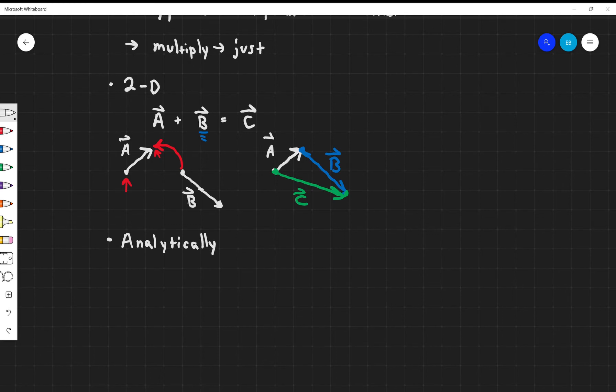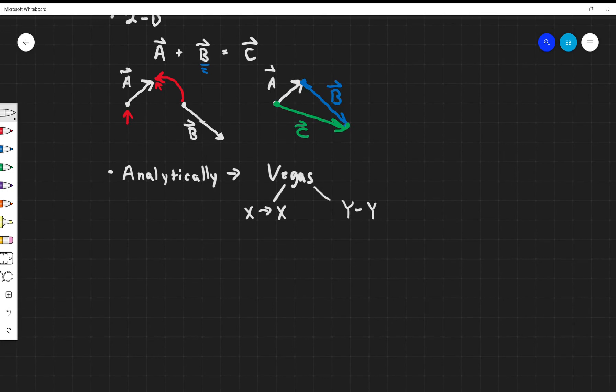When we're adding vectors, we want to think of vectors like Vegas. What we know from Las Vegas: what happens in Vegas stays in Vegas. The same thing is true for vectors. What happens in X direction stays in the X direction, and what happens in the Y direction stays in the Y direction. They're independent of each other. I can only add things in X direction with other things in the X direction. This process of adding vectors in two dimensions - adding only the X in the X direction and only Y stuff with other Y stuff - this is critical.